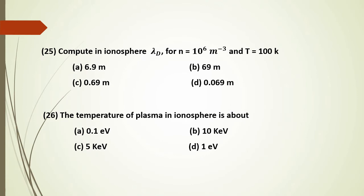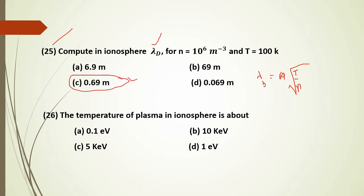For the numerical problem: compute the Debye length lambda_D with permittivity epsilon_0 and temperature T = 0.5 eV. Using the formula lambda_D = 69 × sqrt(T/n), we substitute the values. With T equal to 6 and n given, the result becomes 0.69 × sqrt(T/n).